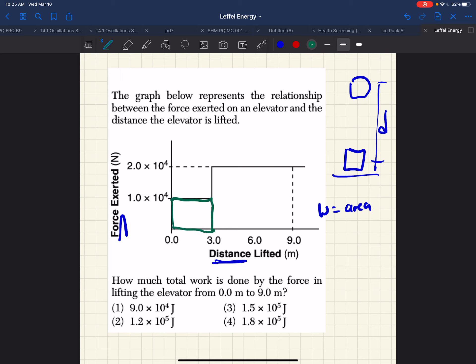We have this shape, so we have 3. This side is 3, and this side is 1 times 10 to the 4th, so this is 3 times 10 to the 4th joules.